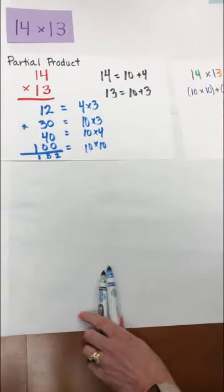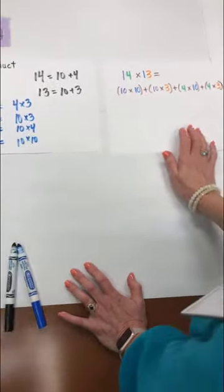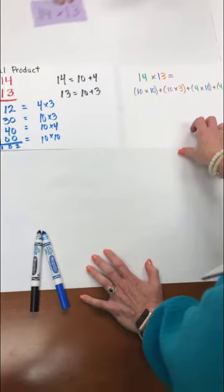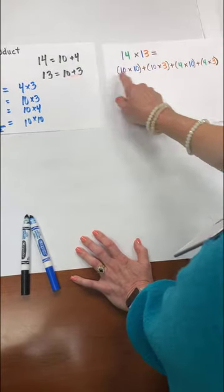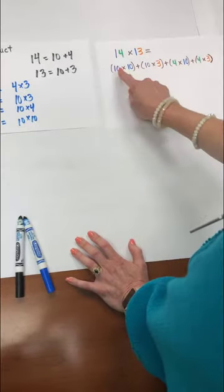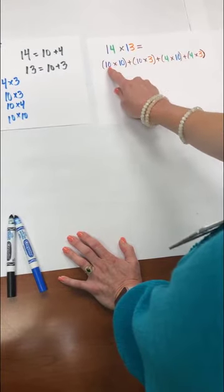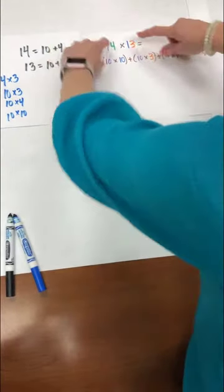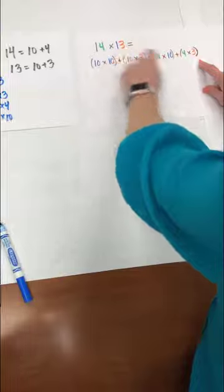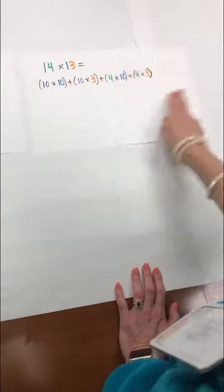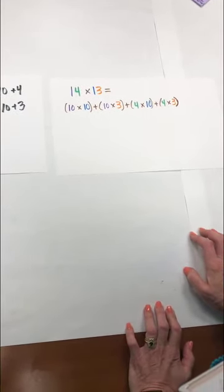Alright so one of the things we also want to show you is students may see this through the distributive property. In third grade students worked with this distributive property using one digit factors. So we want to make sure that we're taking this piece of our partial product and we're allowing students the opportunity to show our 14 times 13 as our 10 times 10, our 10 times 3, our 4 times 10 and our 4 times 3 because they will see it this way as well. Remember in fourth grade we do not teach the standard algorithm for multiplication with whole numbers.